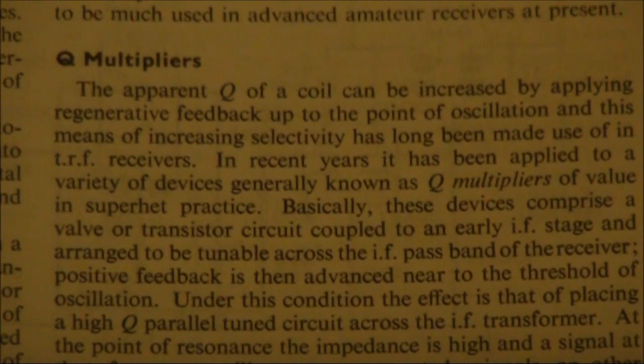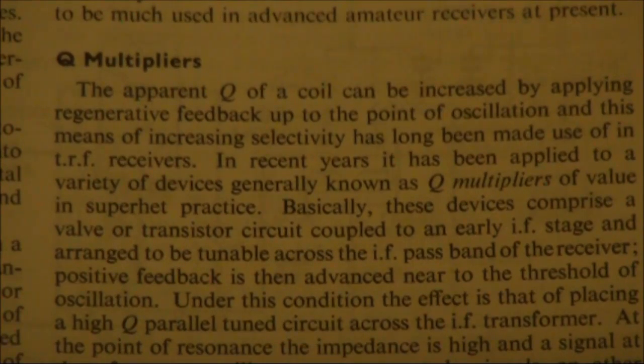An obscure and largely forgotten piece of radio circuit technique is the Q-multiplier. Put across a parallel tuned circuit, they would use positive feedback to improve its selectivity. This was particularly useful in the days when radio receivers had low intermediate frequencies.